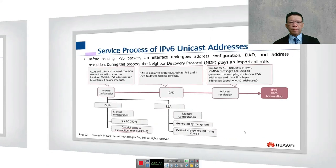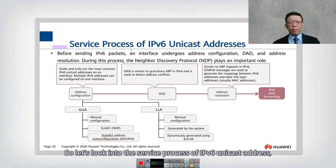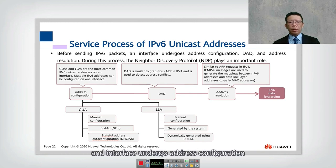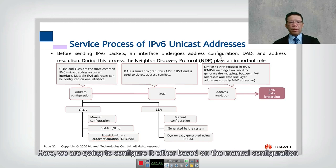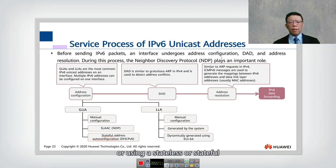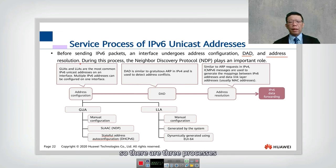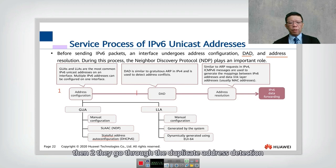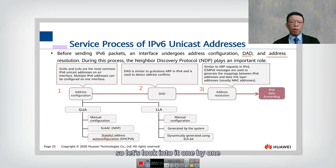Let's look into the service process of IPv6 unicast address configuration. Before sending an IPv6 packet, an interface undergoes address configuration either through manual configuration, stateless, or stateful methods. There are three processes: number one is address configuration, number two is duplicate address detection, and number three is address resolution. Let's look into each one.